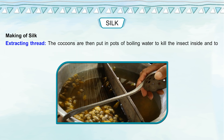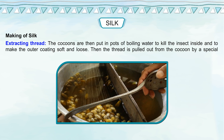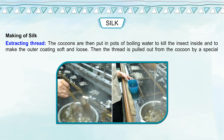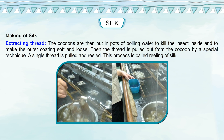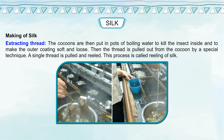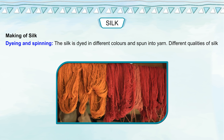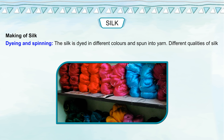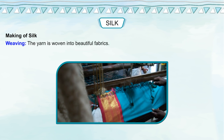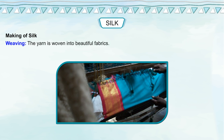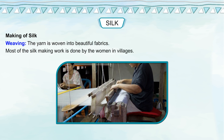The cocoons are put in pots of boiling water to kill the insect inside and to make the outer coating soft and loose. The thread is then pulled out from the cocoon by a special technique — a single thread is pulled and reeled, a process called reeling of silk. The silk is dyed in different colors and spun into yarn, and different qualities of silk are separated based on the length and texture of the yarn. The yarn is then woven into beautiful fabrics, with most of the silk-making work done by women in villages.